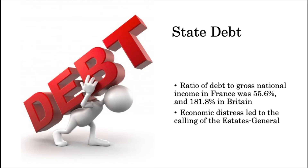The other major drag on the economy was state debt. Traditional views of the French Revolution often attribute the financial crisis of the 1780s to the 1778–1783 Anglo-French War, but modern economic studies show that this is in fact untrue. In 1788, the ratio of debt to gross national income in France was 55.6% compared to 181.8% in Britain. Although France's borrowing costs were higher, the percentage of tax revenue devoted to interest payments was about the same in both countries.